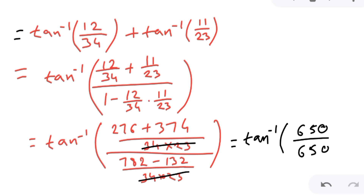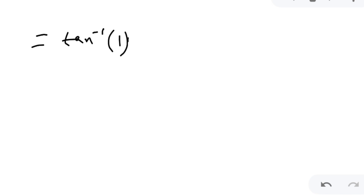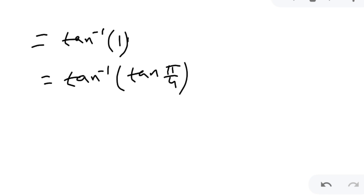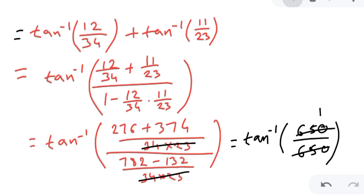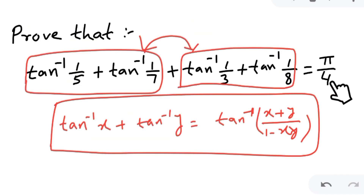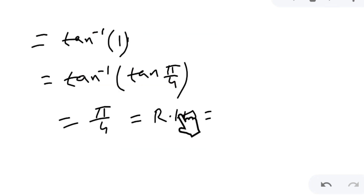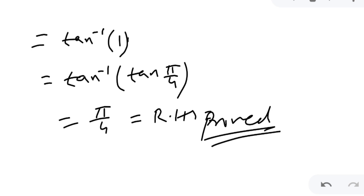Since tan(π/4) = 1, we have tan inverse 1 = π/4. And since tan inverse(tan θ) = θ, this equals π/4, which is our RHS. So LHS equals RHS — hence proved. I hope you understood the solution.